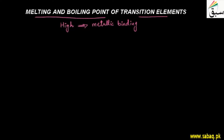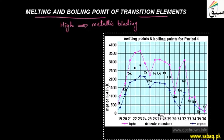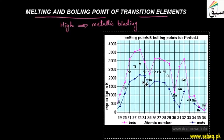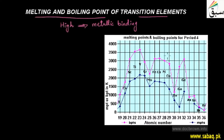Melting and boiling points are related to this trend. When we look at the graph for the first transition series, the blue line represents the melting point and the pink line represents the boiling point.